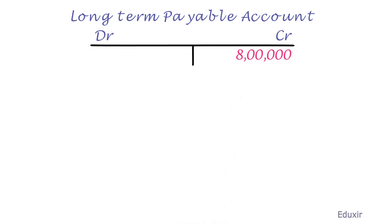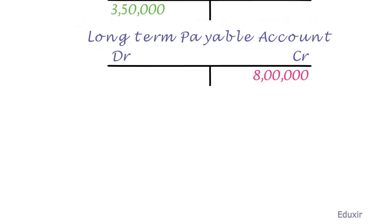Note that the total payment is 2 lakhs plus 8 lakhs, that is 10 lakhs. You might wonder why 10 lakhs even though the assets purchased are worth 5 lakh rupees. This is because the seller is giving a lot of time for the buyer to make the payment, and to compensate for the delay the business has agreed to pay an additional amount — this is common in business. That covers transaction B.